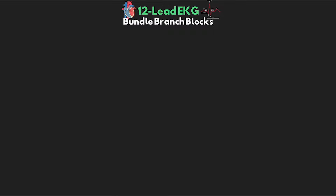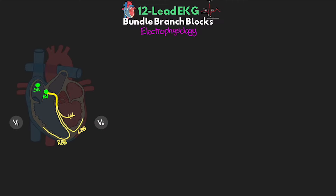Now let's talk about the electrophysiology and what we expect to see on our 12-lead. Looking at the heart, we have our six chest leads V1 through V6, which look at the heart across the horizontal plane. V1 is our most rightward lead in relation to the patient's heart, and V6 is the most leftward. These are going to be the most important leads for us to look at and understand the changes we'd expect to see.